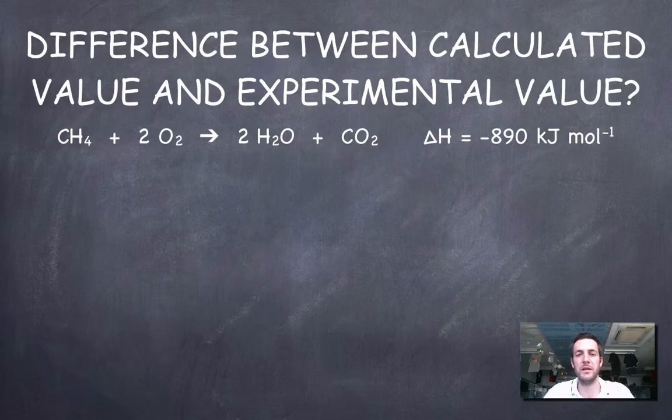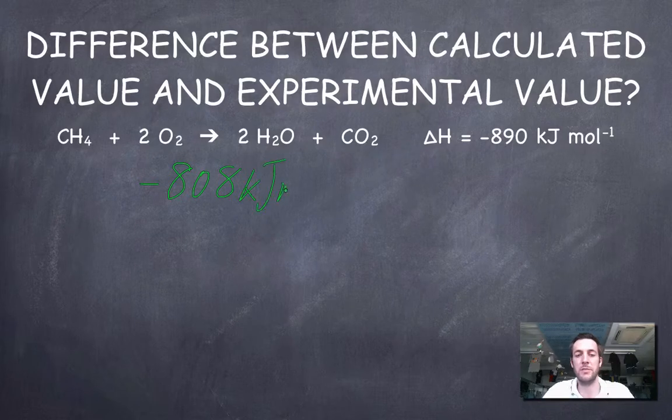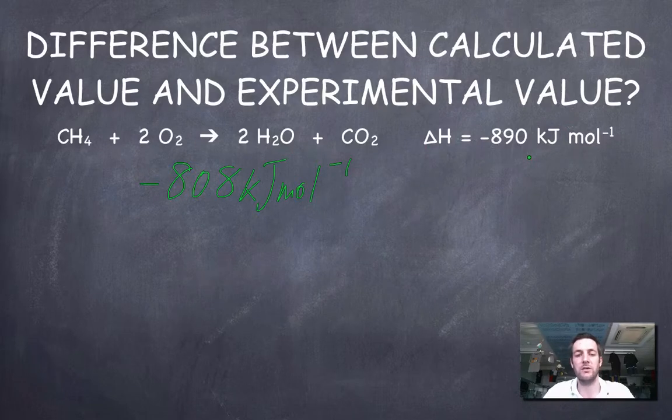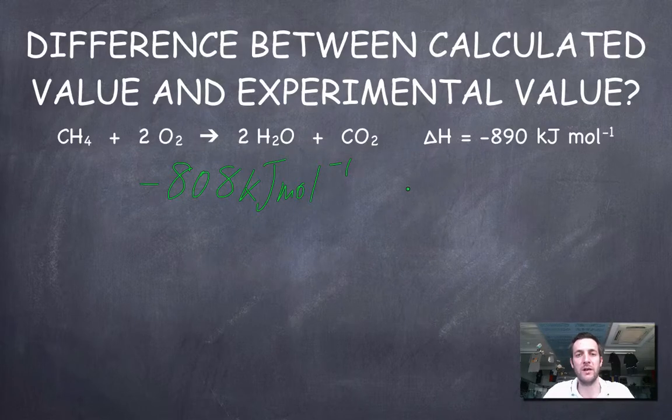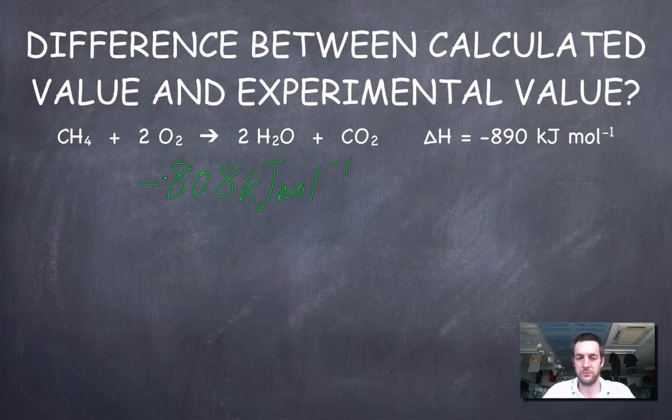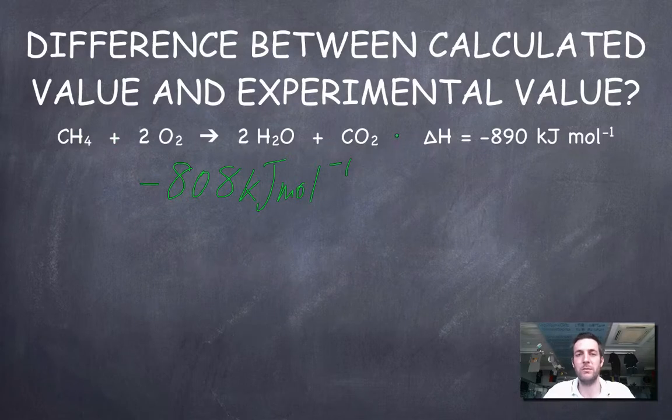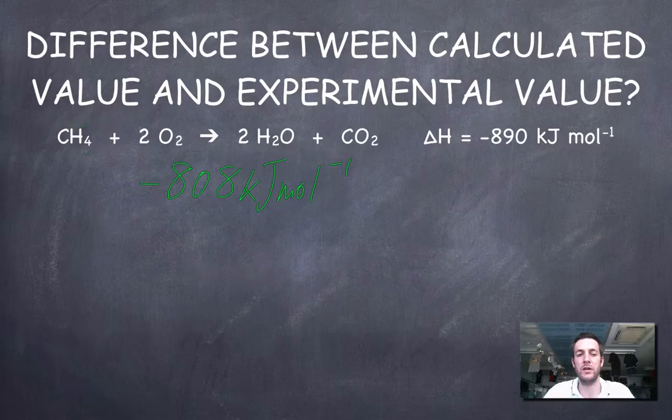Now, there's just one more thing to mention in this film and that is the difference between a calculated value, which we just found, remember, for this reaction, we decided it was minus 808 kilojoules per mole and an experimental value, which it turns out is minus 890 kilojoules per mole, which means that when someone actually did this reaction, they measured the heat change or the enthalpy change and they decided that for every mole of methane, 890 kilojoules was released. And there's quite a substantial difference between those two numbers. Where could that have come from? Well, remember, when we calculated this value, we used average bond enthalpies. So, these are values for these bonds which aren't the same in all cases. So, we ought to expect some discrepancy here and that's a really common question to see. Why is there a difference between the calculated and the experimental value? And you should simply refer to the fact that because we used average bond enthalpies, we're not necessarily using exactly the right amount of energy for each bond.